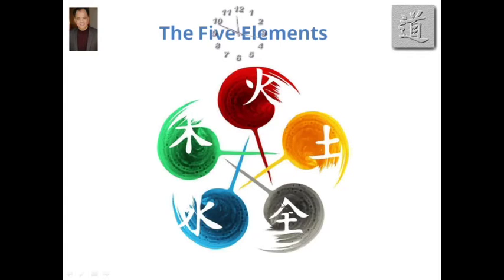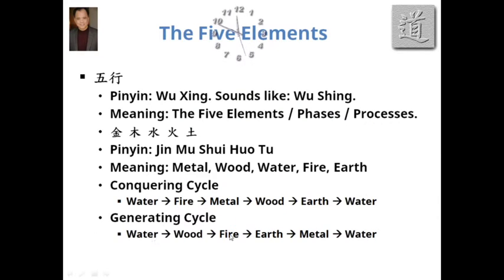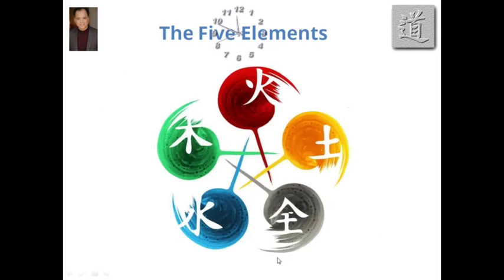That pentagram — the five-pointed star you see here — represents the conquering sequence, the overcoming sequence. There is also another sequence: the generating cycle. In Chinese, it's more like this element gives birth to this other element. Let's take a look graphically.